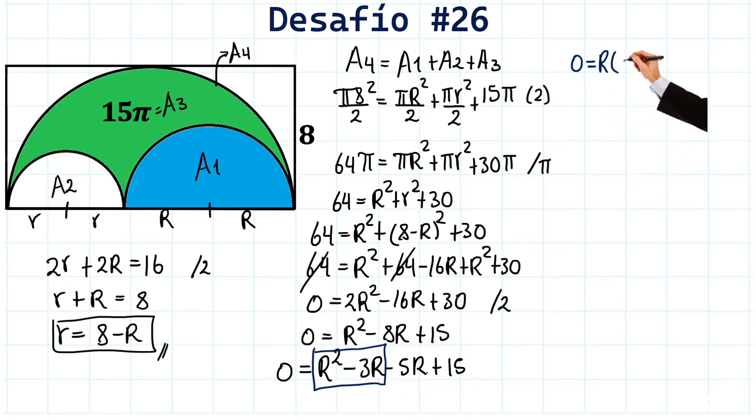Look at these two terms where we are going to take out the common factor R. So, R multiplied by R. R times R gives us this R squared minus 3. Very well.